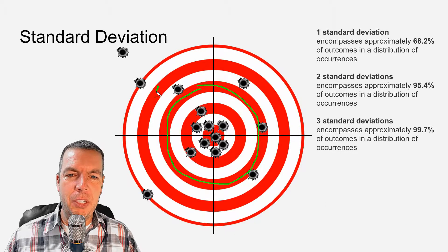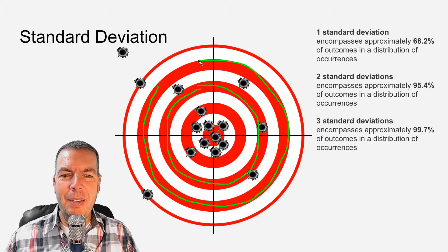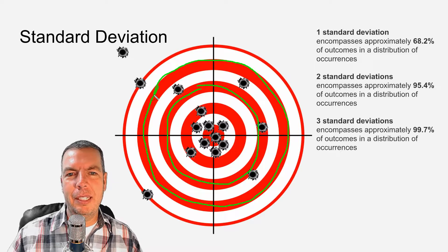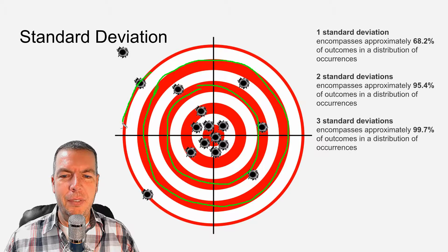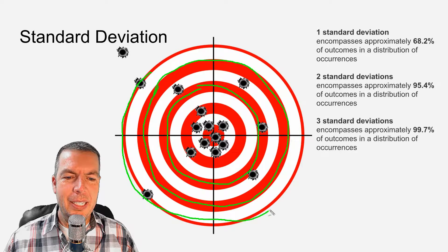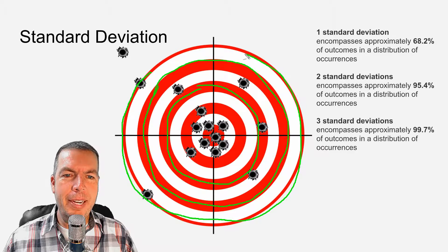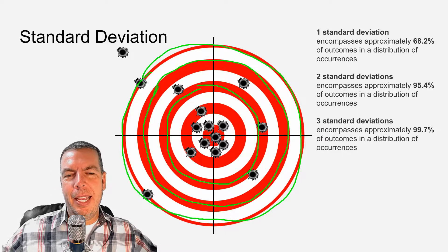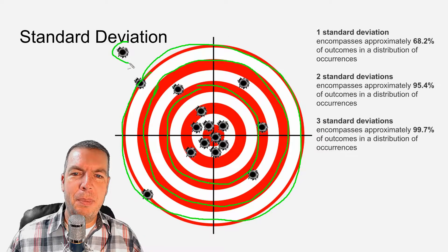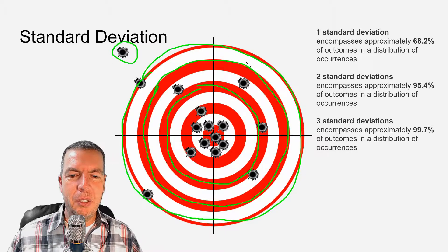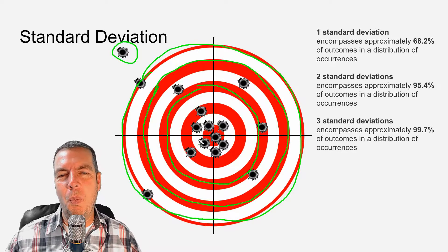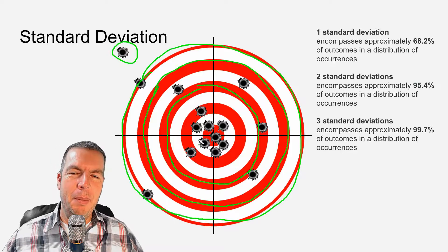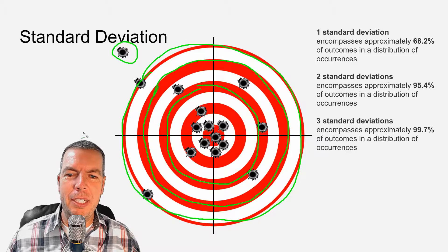If we go out to that two standard deviation range, we're going to pick up a few more — that's going to encompass about 95.4% of all the input put into this target. And if we go out to that three standard deviation range, that's going to encompass almost 100% of our inputs or numbers. We're going to have those few outliers representing that 0.3%. So looking at this target, it gives us a good idea of what we're talking about — most input is going to fall within that one standard deviation range.